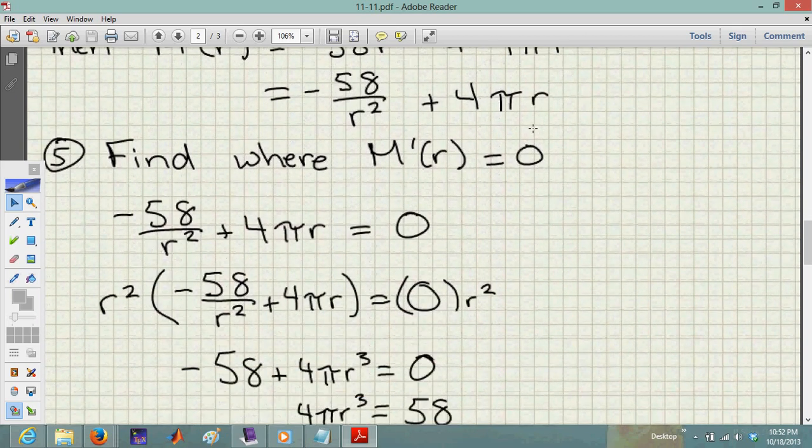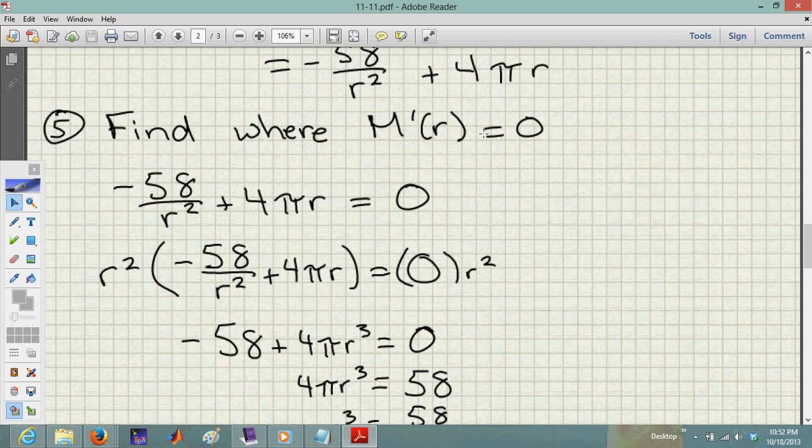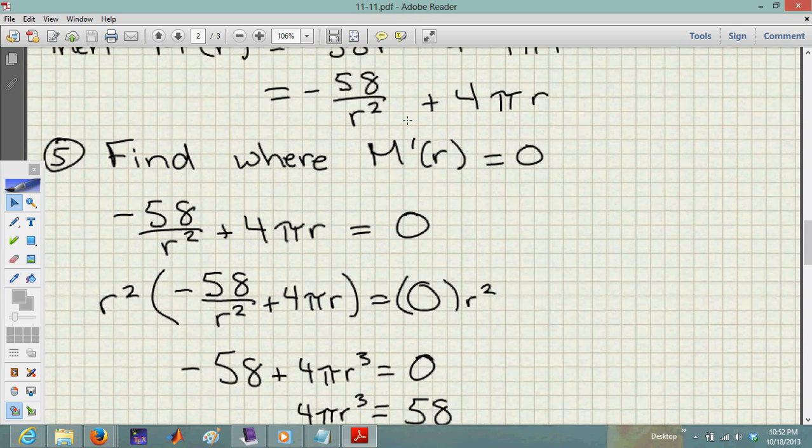Now set that equal to 0. Technically we should also check where it doesn't exist, but that's where the radius equals 0, which doesn't make sense as a can. So let's set M'(r) = 0.